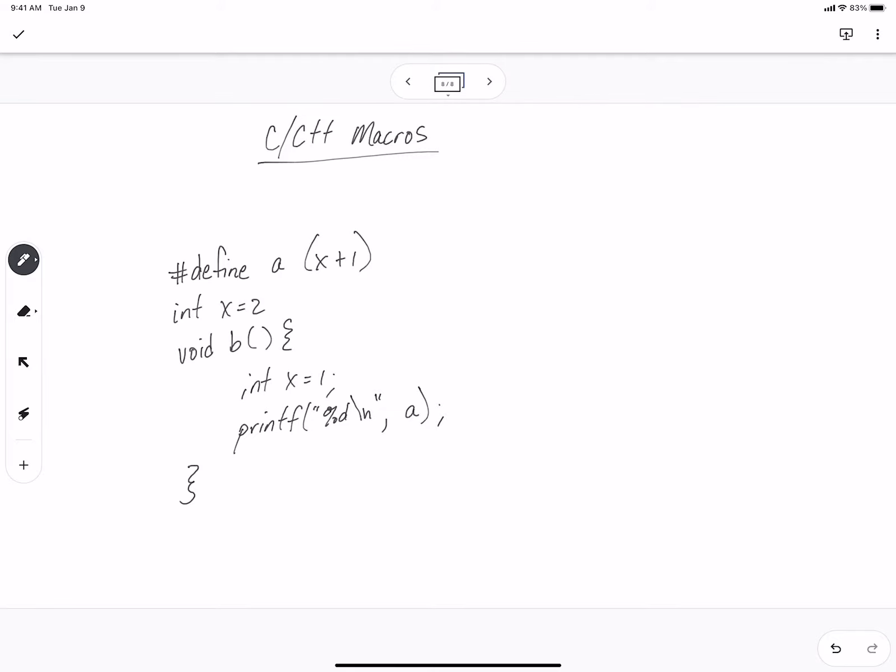Macros in C and C++ work as follows. We have this pound define. That's actually a preprocessor directive. And what it means is every time you see this A, I want you, compiler, to replace it with x plus 1.